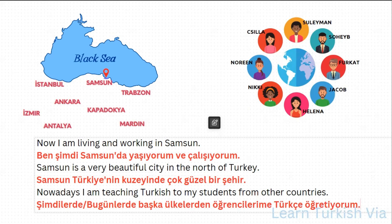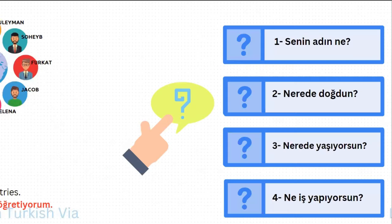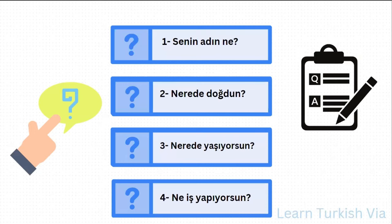So, nowadays I'm teaching Turkish to my students from other countries. Alright friends, this is my short biography. Now let's take a look at these four simple questions. The first question is: senin adın ne? — What is your name? The second one is: nerede doğdun? — Where were you born? And the third one is: nerede yaşıyorsun? — Where do you live? And the fourth one is: ne iş yapıyorsun? — What job are you doing? Are you a doctor, a teacher, a retired person, a student, or a housewife? Don't be shy and answer these questions in the comment section. Let's see who is following these lessons and let's meet all together.